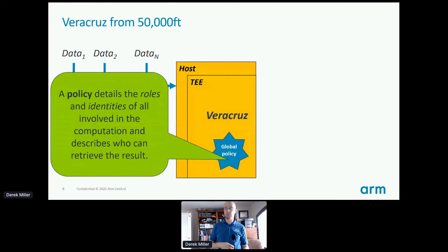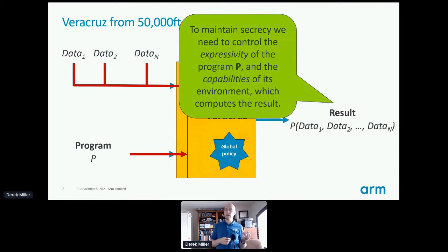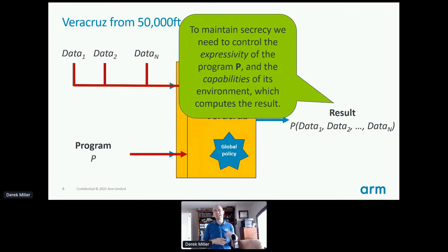That policy is currently a JSON file — there's not a great reason we just used it. The program and data are provisioned securely using TLS terminated inside the TEE into Veracruz. Inside Veracruz the result is computed and then can be retrieved by an entity specified in the policy file. Identities in the policy file take the form of self-signed X.509 certificates. To maintain secrecy, we also need to control the expressivity of the program and the capabilities of its environment — that's another area where WebAssembly becomes really useful because of its sandboxing aspects, and we get to closely control its interface to the outside world.